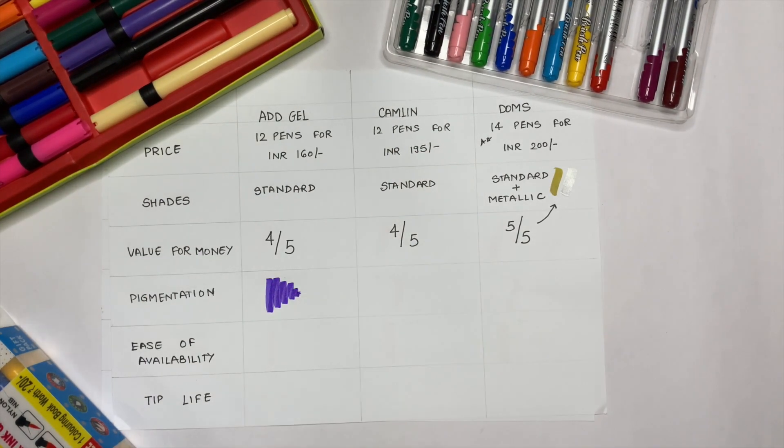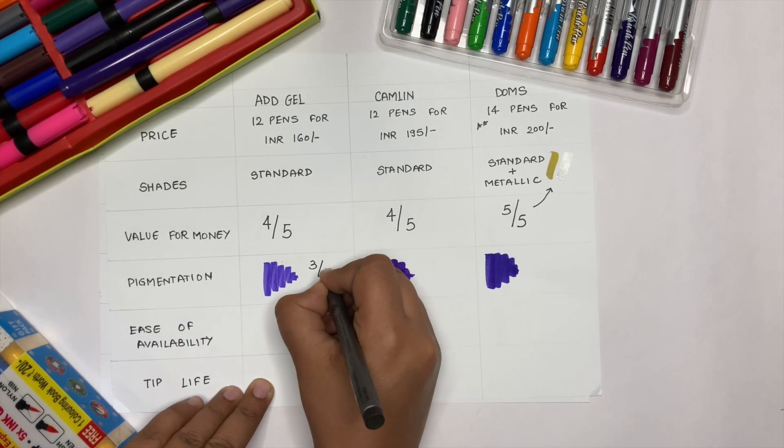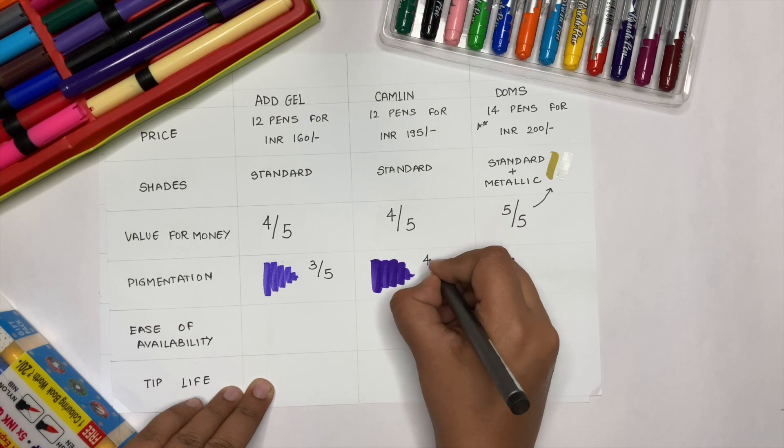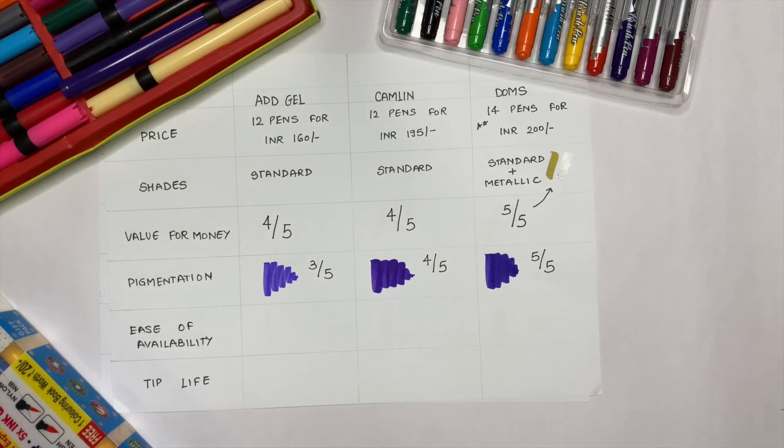Let's check out the pigmentation of the inks in these pens. ADD Gel brush pens are decent, so 3 on 5. Camlin brush pens are way more pigmented, so I give them 4 on 5. But DOMS brush pens are very pigmented. They have some really nice and bright colors, so I give them 5 on 5.